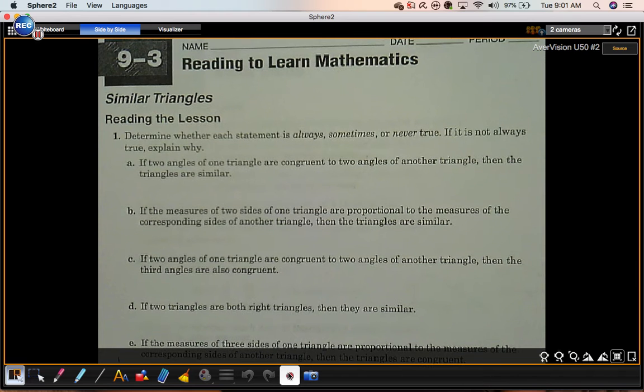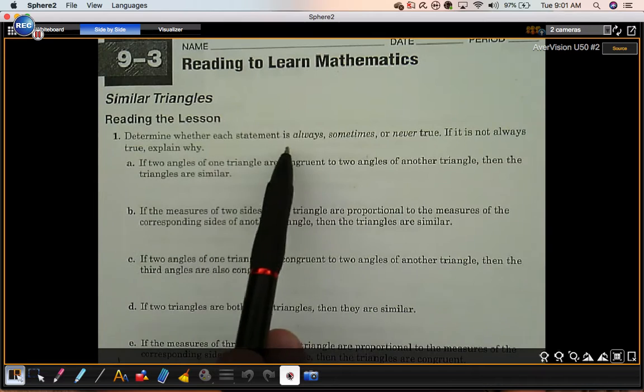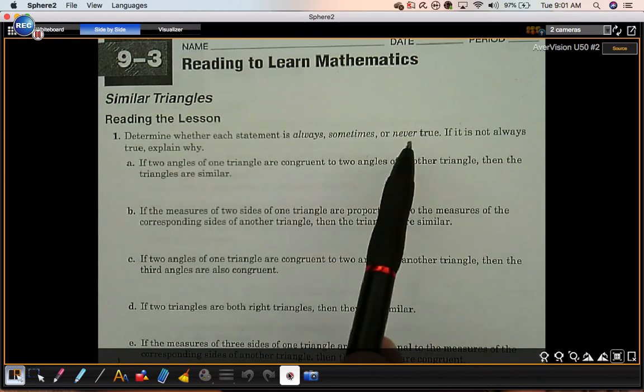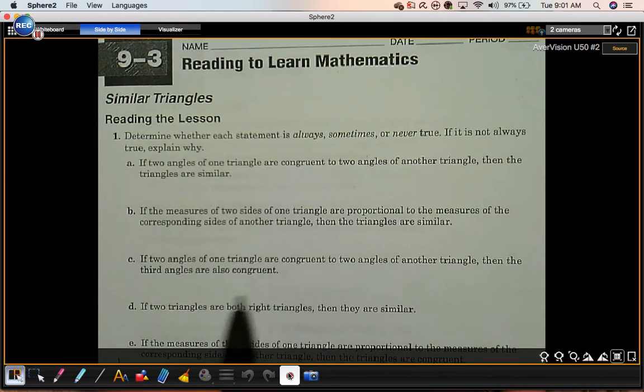This is the reading to learn math page for section 9.3 on similar triangles. We're going to determine whether each statement is always, sometimes, or never true. If it's not always true, explain why.